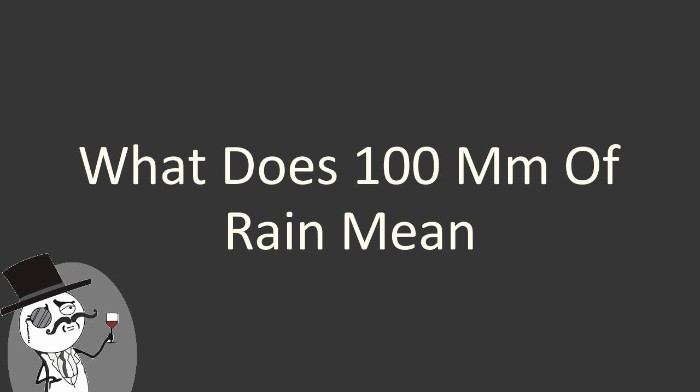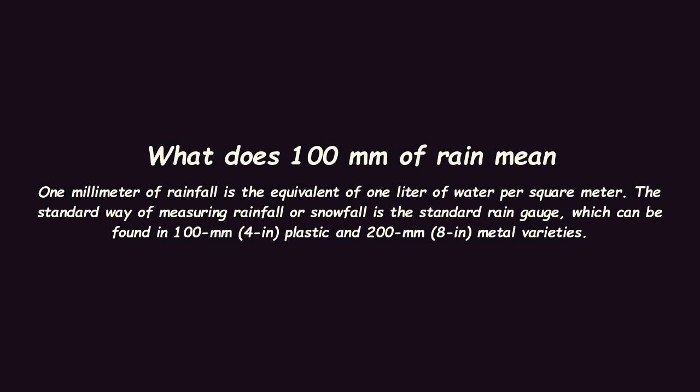Here is the explanation about what does 100mm of rain mean. 1mm of rainfall is the equivalent of 1 liter of water per square meter. The standard way of measuring rainfall or snowfall is the standard rain gauge, which can be found in 100mm (4 in) plastic and 200mm (8 in) metal varieties.